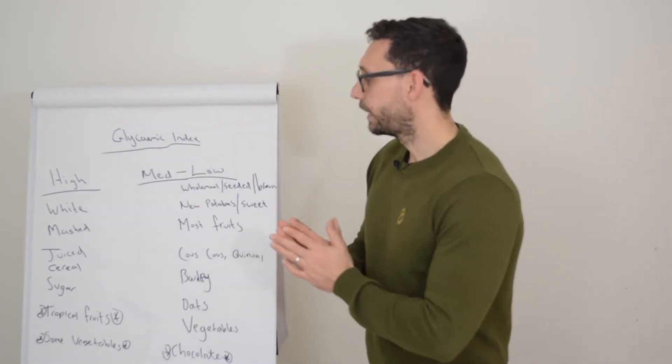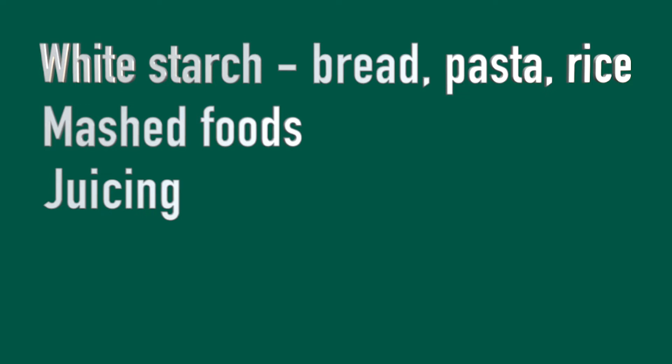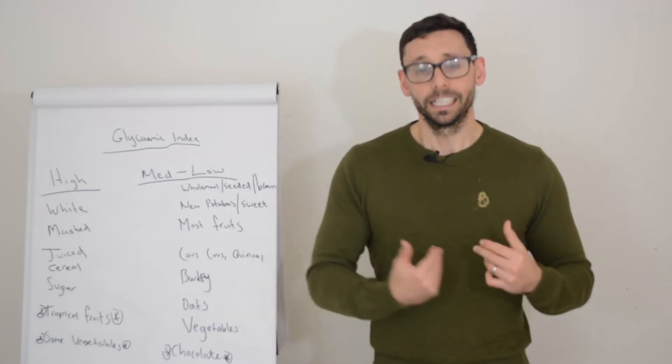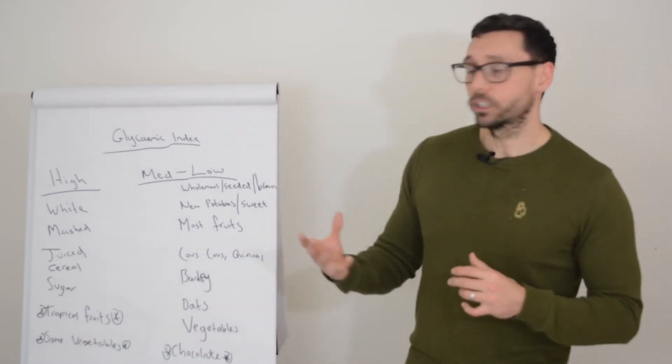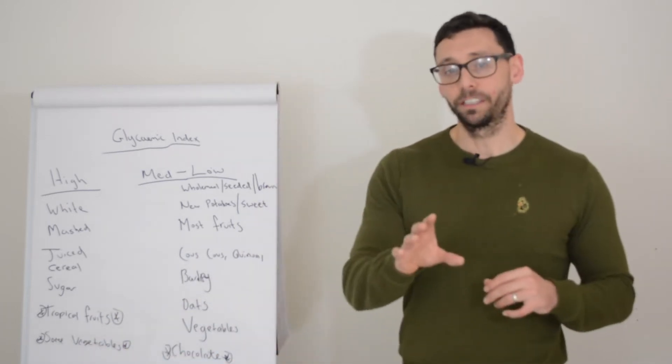High glycemic index foods is anything that tends to be quite processed - your white starch like white bread, white pasta, white rice. Anything that you mash like mashed potato is literally breaking down the starch. Same with things like juicing - any orange juice, apple juice, pineapple juice. It's why it's one of our hypo treatments. Same with sugary drinks. Cereals, although they can be low or medium GI on the pack, the second you add milk to them and soften them up, it becomes really easy for your body to absorb. You barely need to chew cereal once it's moistened. Any tropical fruits and some vegetables are also high glycemic index. I've added some stars next to these because there's a caveat with this, which we'll come back to.